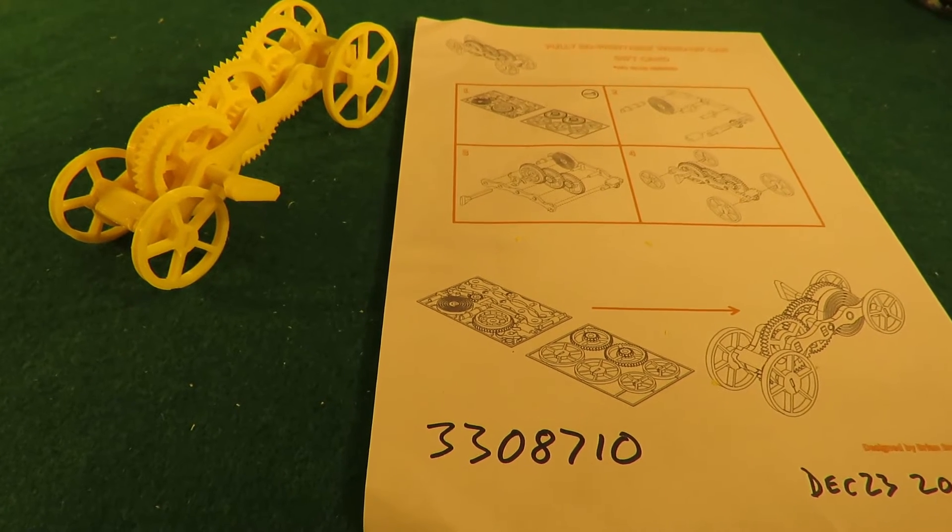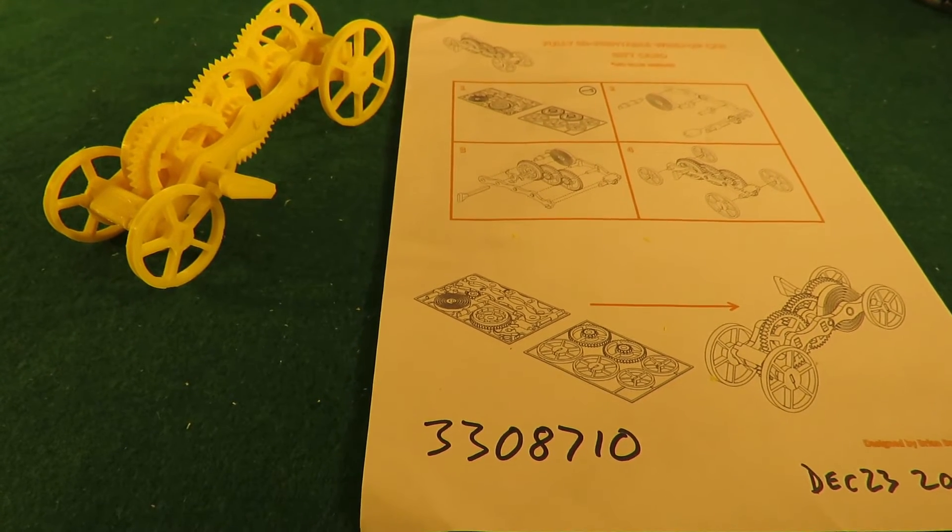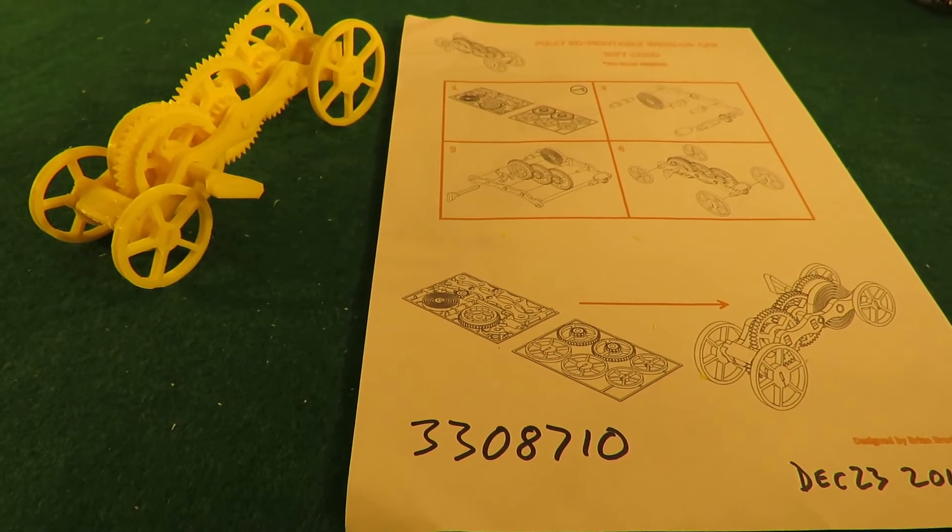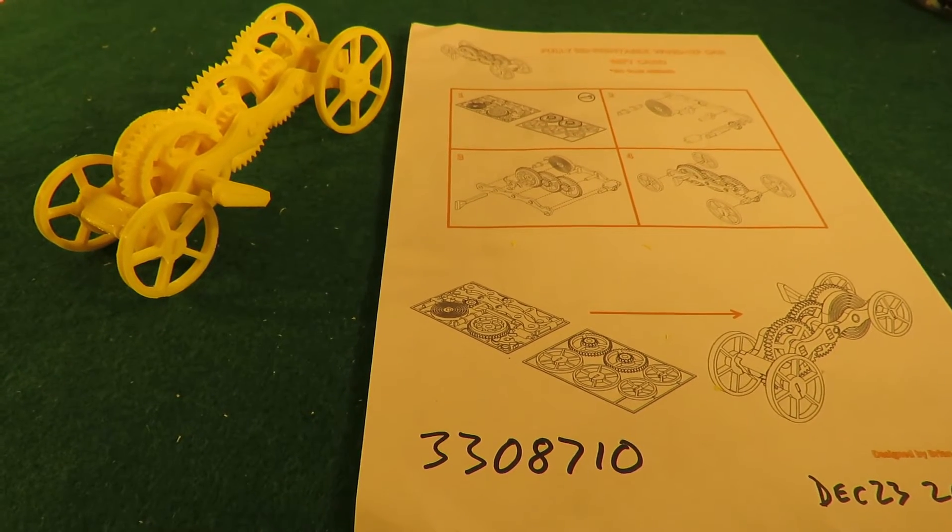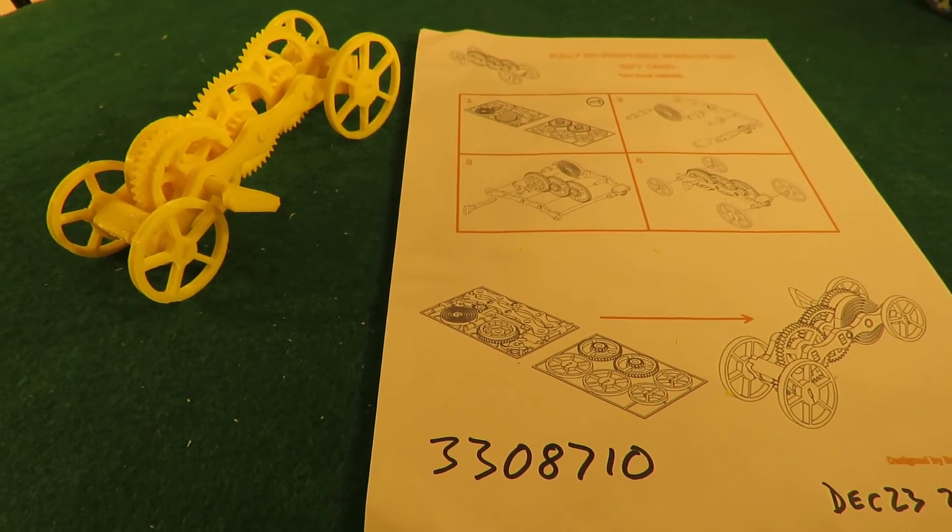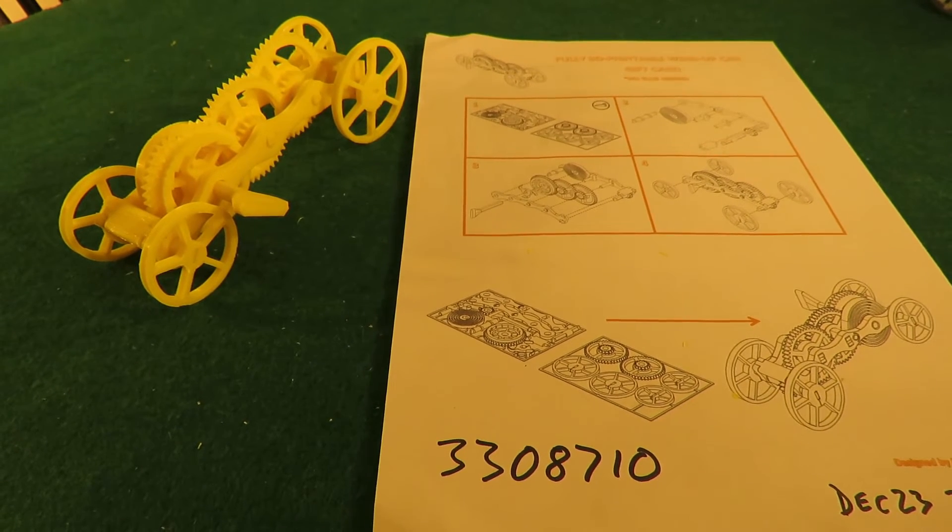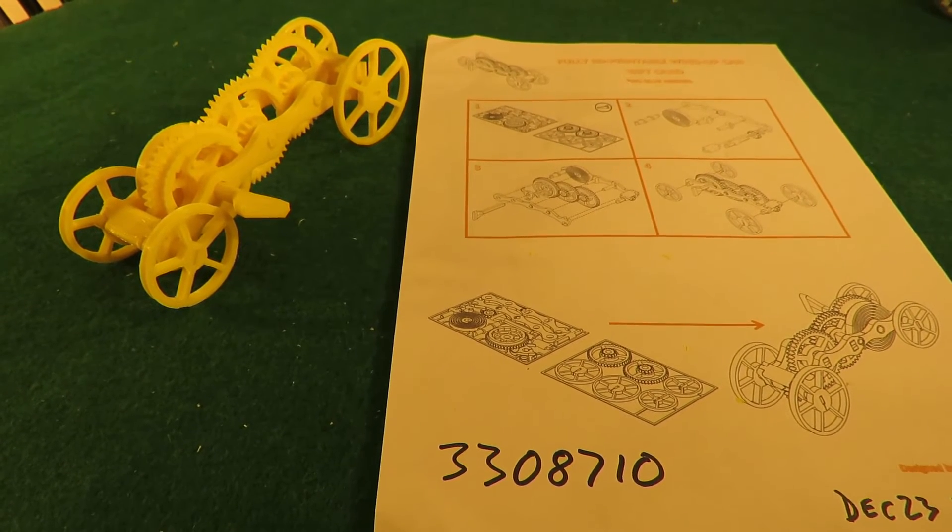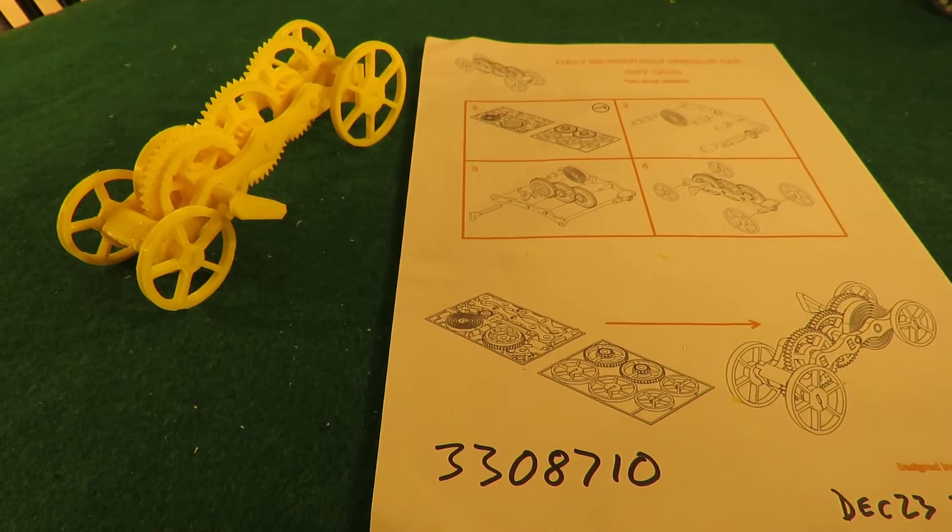So in summary, that build took about ten times as long as it should have done because I printed it the wrong way. And we're not getting the performance that we probably would if all those gears were nice and clean instead of me having to trim them with a file.